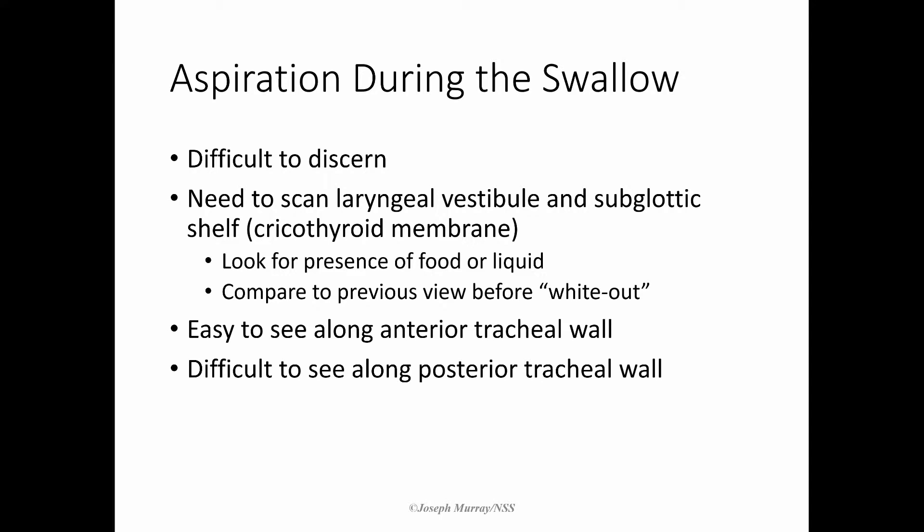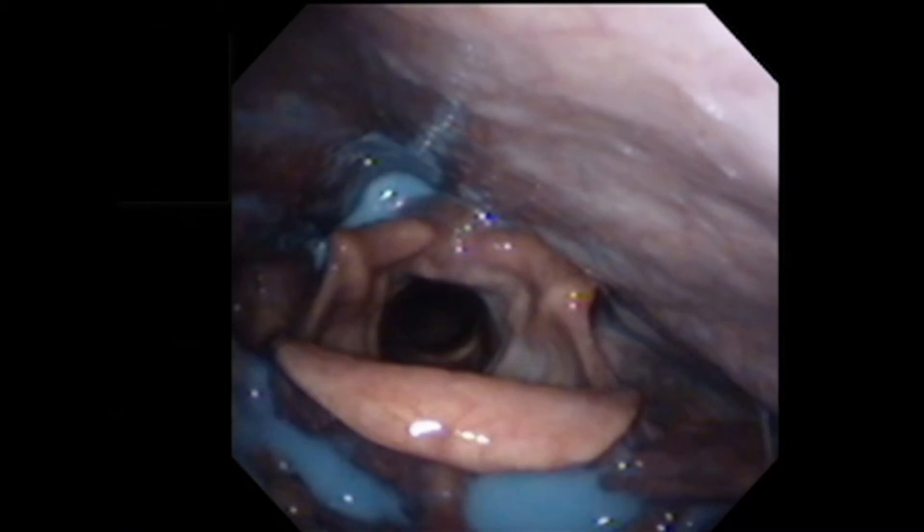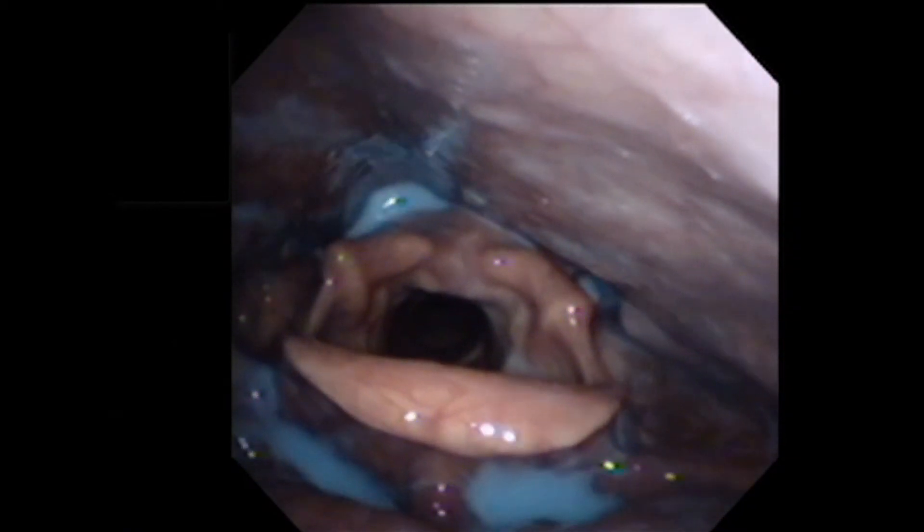This is perhaps the most difficult pharyngeal stage finding to determine when employing laryngoscopy. The period of obliteration or whiteout will prevent direct viewing of penetration or aspiration. The laryngeal vestibule and subglottic shelf will sometimes hold clues as to the path of the bolus during the period of obliteration. Occurrences of laryngeal penetration with resulting residue in the endolarynx during the swallow are fairly easy to identify after the epiglottis returns to rest and the larynx opens up for visual inspection.